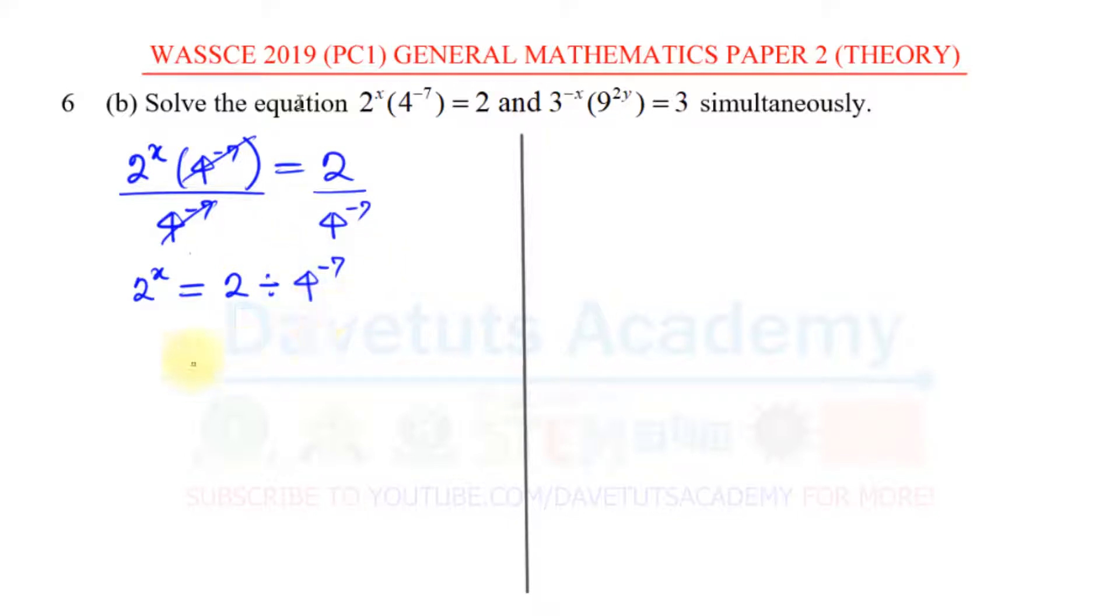But 4^(-7) itself, I know it is something like this: 2^x = 2 ÷ (2^2)^(-7). This is the operation of powers of indices that can help us to express all the bases together. So I can further say this is 2^x equal to 2 divided by 2^2 raised to power -7. I can multiply the powers to give me 2^(-14).